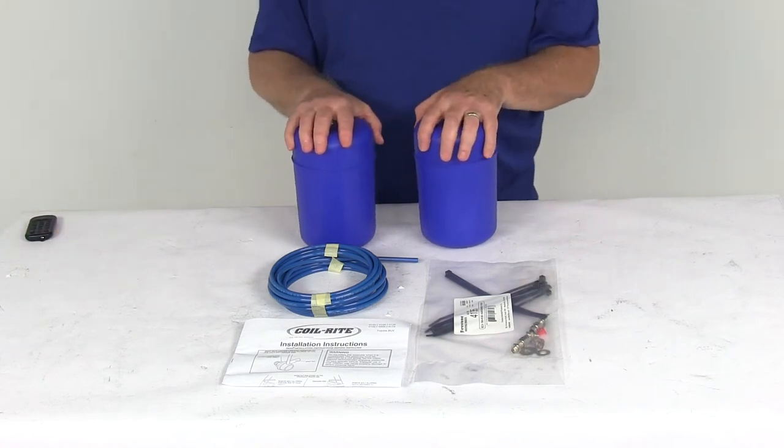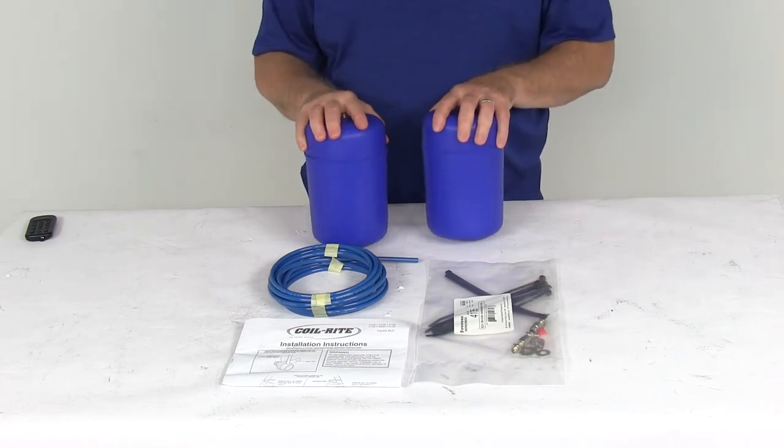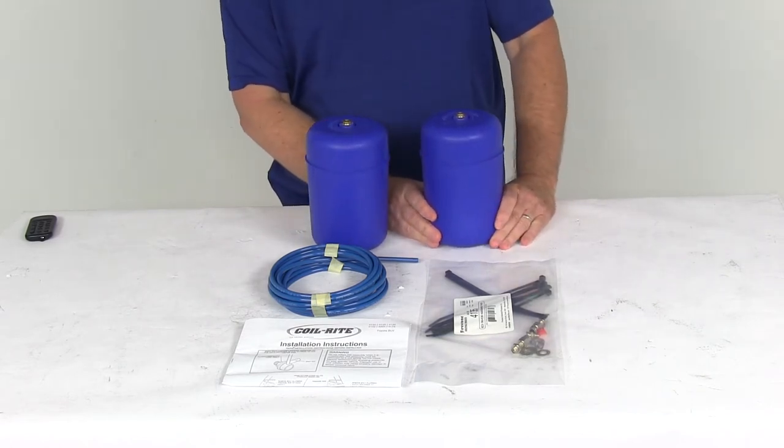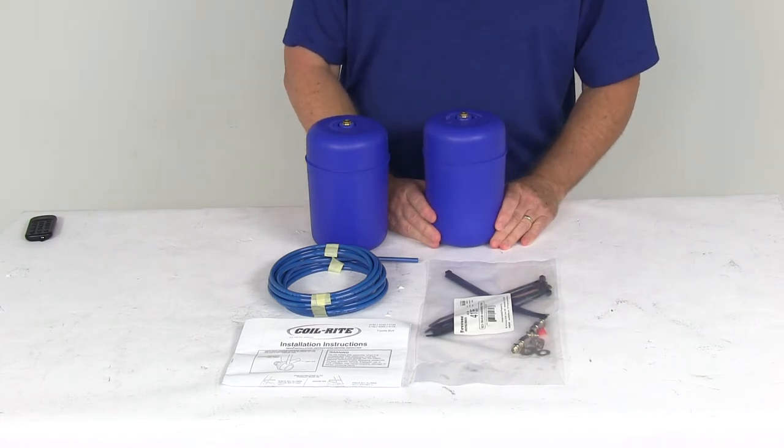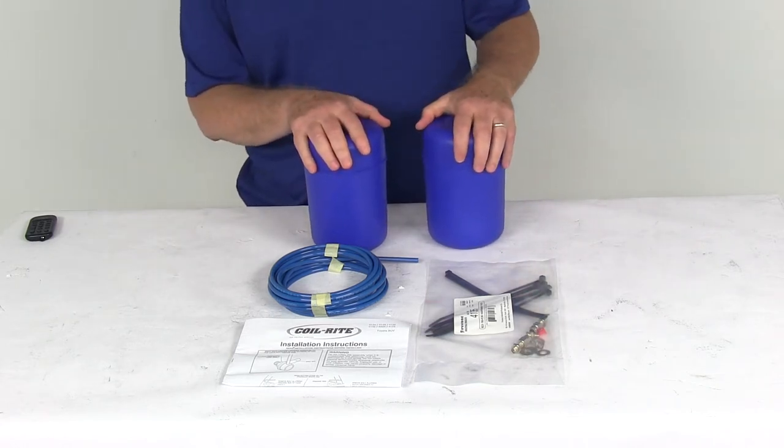Today we're going to take a look at the Firestone Coil-Rite Rear Axle Air Helper Springs. This is a custom fit part designed to fit the 1998 to 2016 Toyota 4Runner, the 2007 to 2014 Toyota FJ Cruiser, and the 2013 to 2016 Lexus LX570.